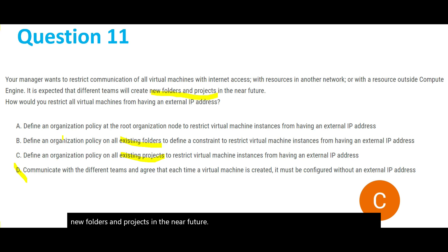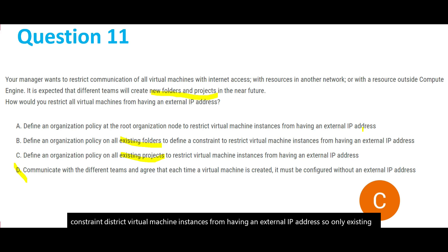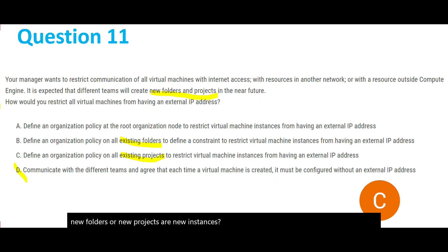They say define an organization policy on all existing folders, or define a constraint to restrict virtual machine instances from having an external IP address. So only existing virtual machine instances will not have an external IP address. But what about new folders, new projects, or new instances? They might have an external IP address, so it's not guaranteed. So B is not the answer, and for the same reason C is also not the answer.